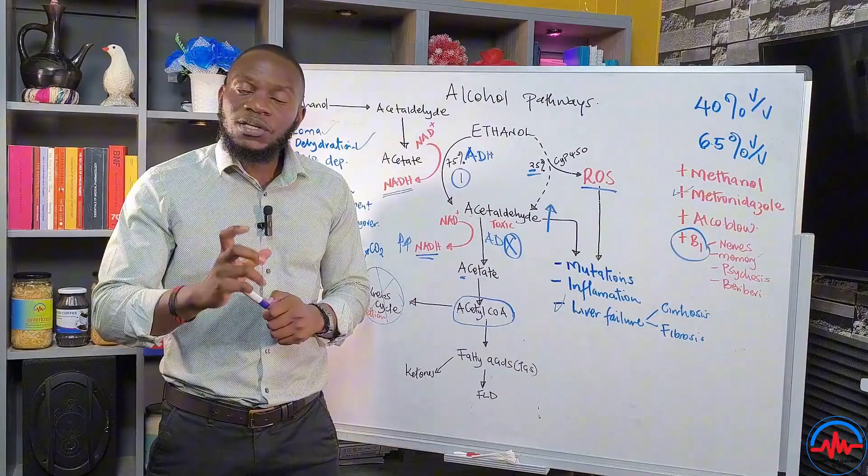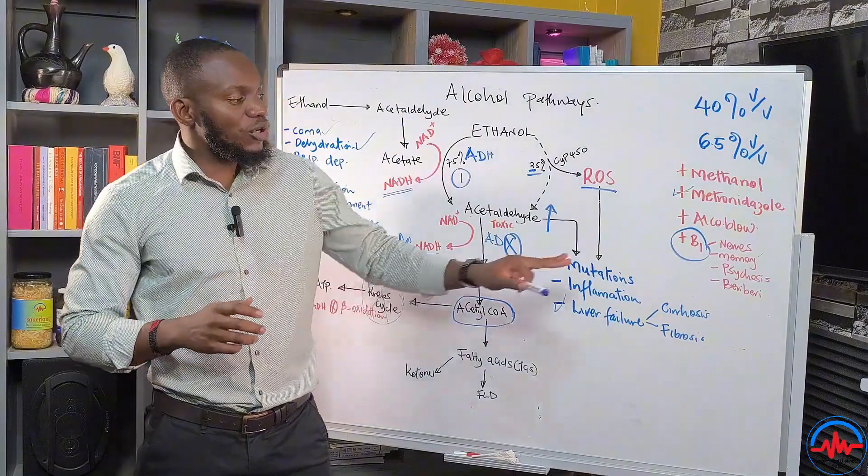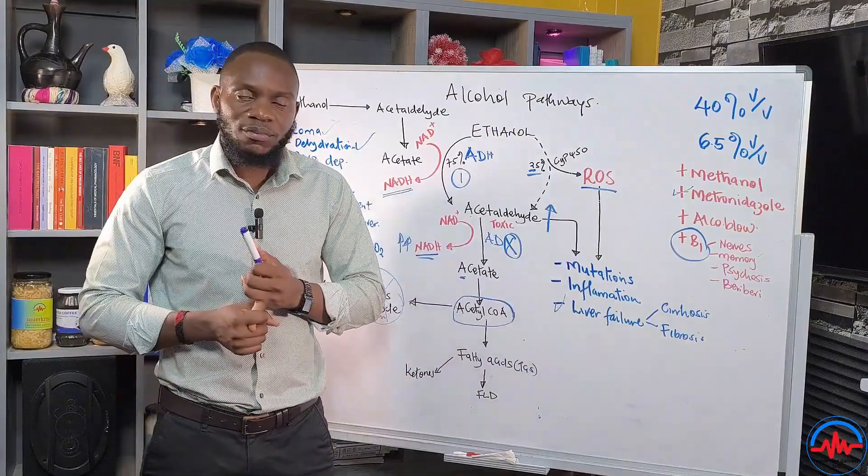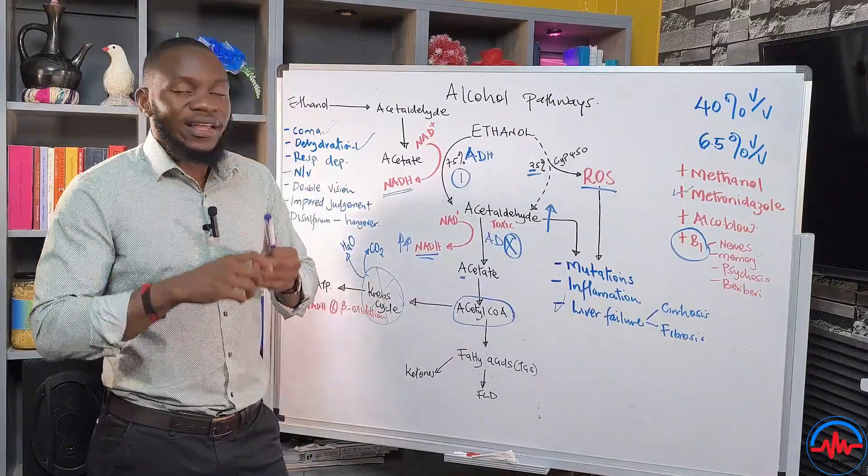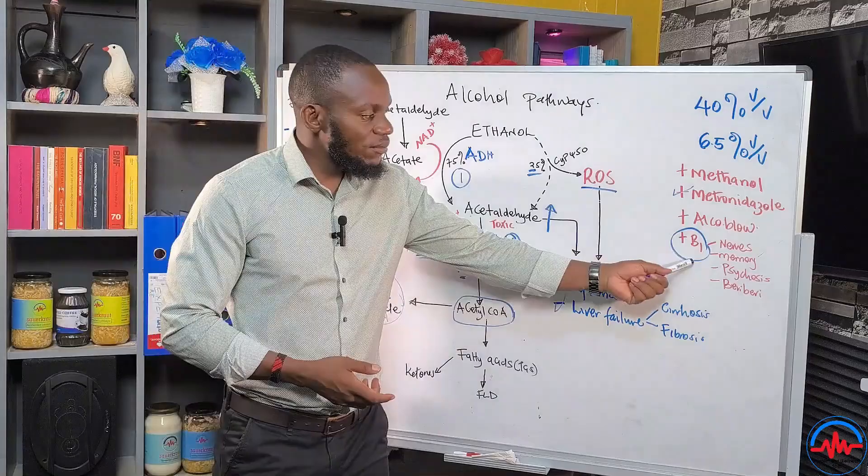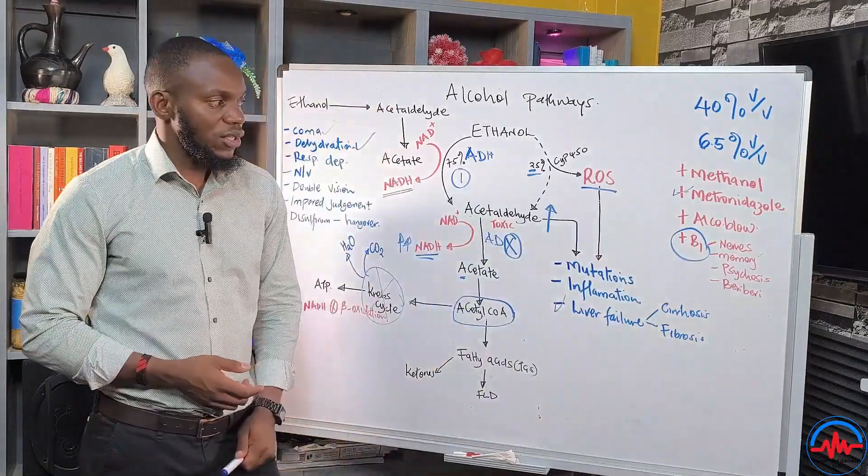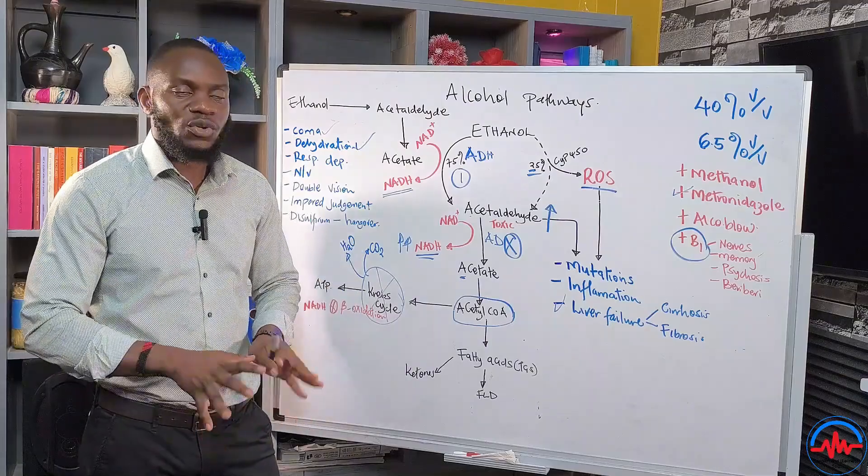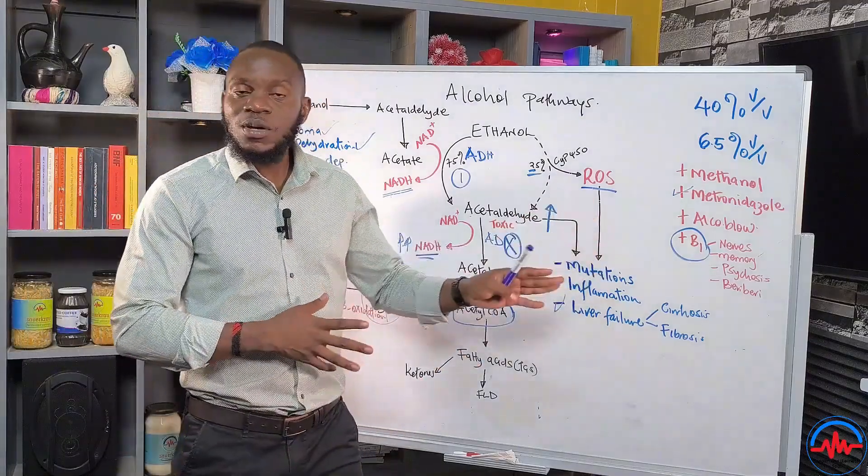When you are unable to absorb vitamin B1, you end up having a condition called beriberi. This vitamin B1 is necessary in brain development, in nerve function. If you end up having vitamin B1 deficiency, you are going to have nerve problems, the numbness, the tingling, sometimes very hot feet or cold feet.